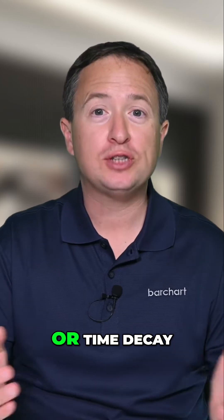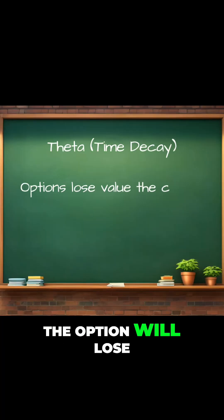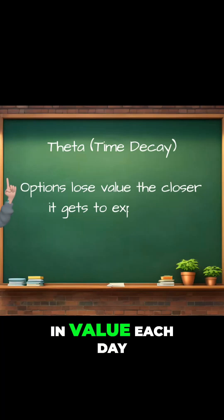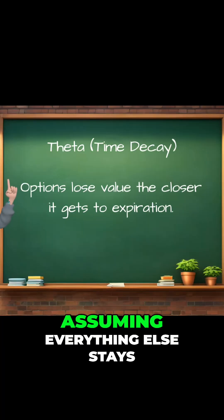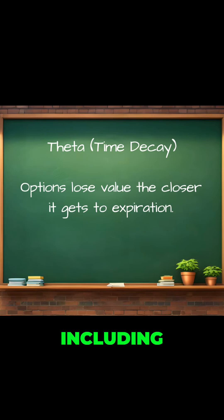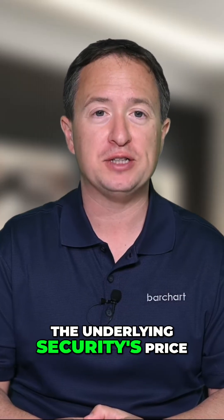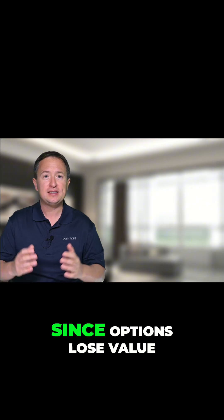Next, we have theta, or time decay, which indicates how much the option will lose in value each day, assuming everything else stays the same, including the underlying security's price.